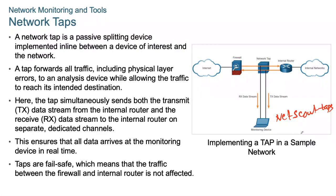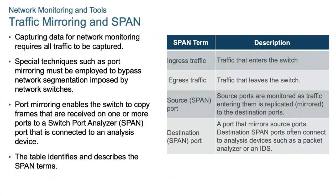Another network monitoring approach is traffic mirroring and SPAN. Network switches segment the network by design, which limits the amount of traffic visible to monitoring devices. Since capturing data for network monitoring requires all traffic to be captured, special techniques must be employed to bypass the network segmentation imposed by network switches.